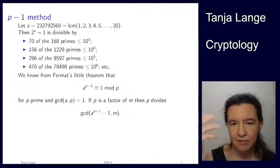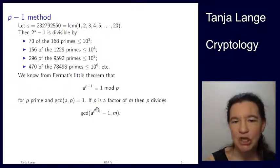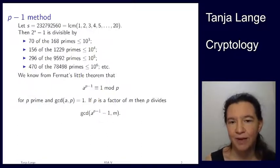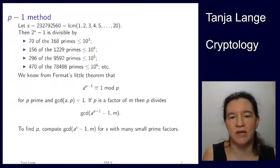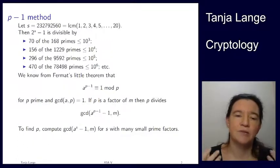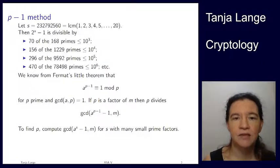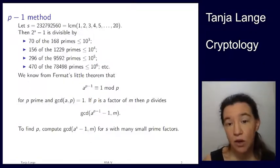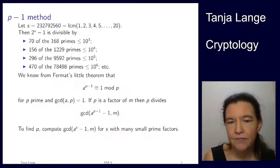This is how I can turn this into a factorization method. I pick a random a, compute a to the (p minus 1) minus 1, and then compute the gcd of that with m. If p is a divisor of m, then p will also be a divisor of this gcd. Except there's a logical problem: I can't do that because I don't know what p minus 1 is — I want to find p, so I can't take p minus 1. So in the p-1 method, instead of taking the exponent p minus 1, we take some exponent s that has lots of small prime factors.